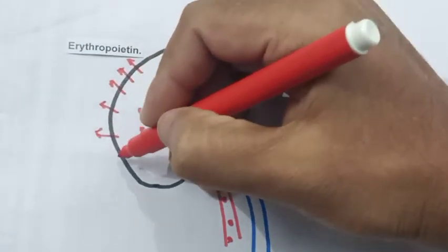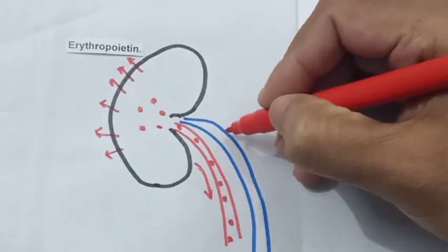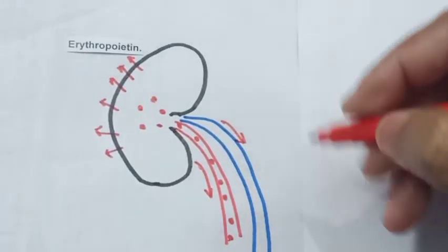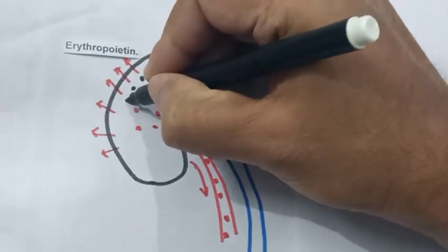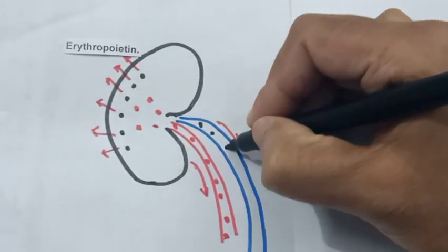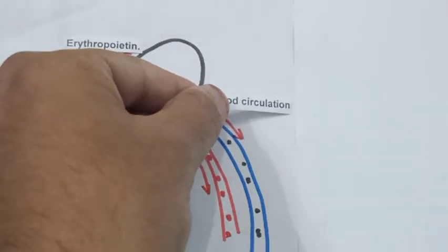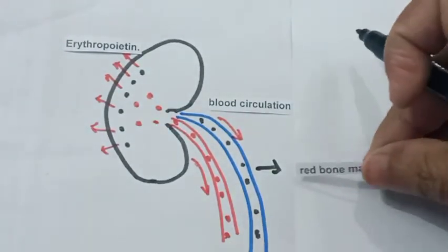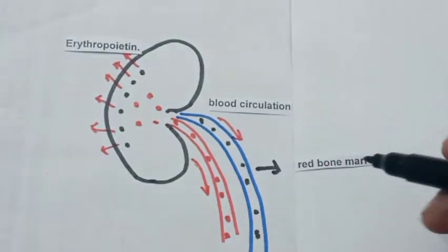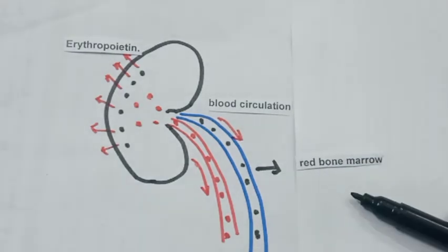Erythropoietin goes into the blood circulation. After secretion, it goes into the blood circulation and enters the red bone marrow. Red bone marrow is located inside the long bones and flat bones, and it activates the hemopoietic stem cells.